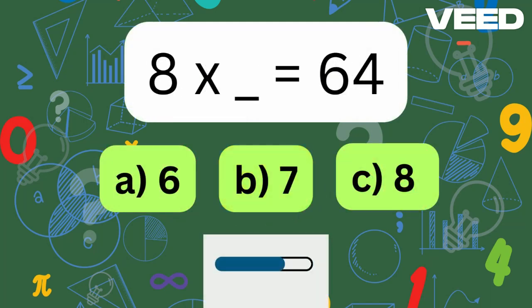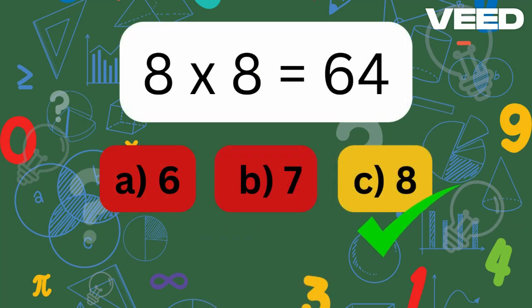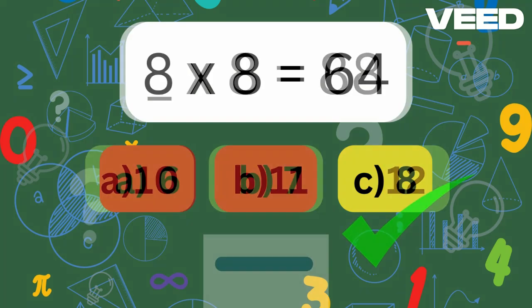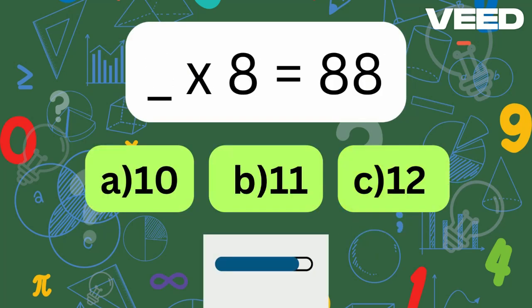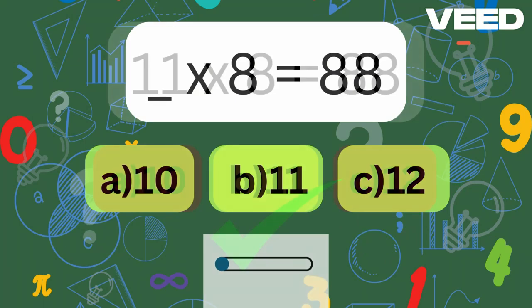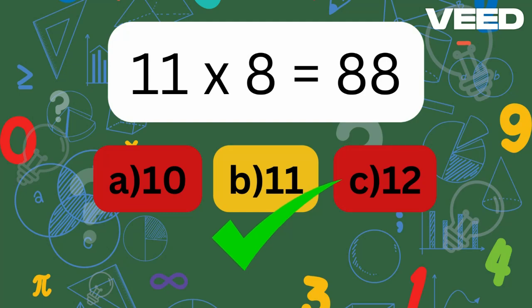8 times what is 64? 8 times 8 is equal to 64.